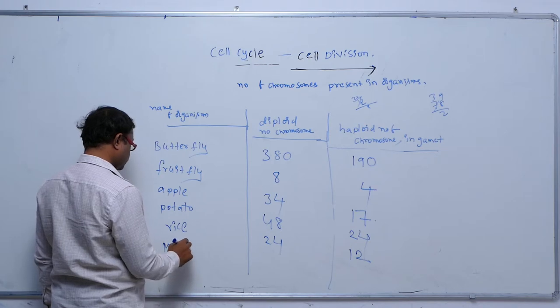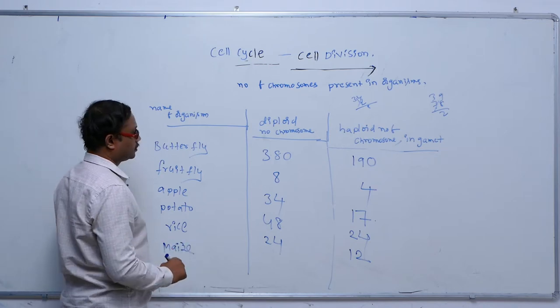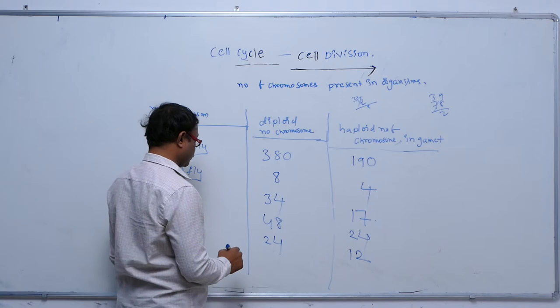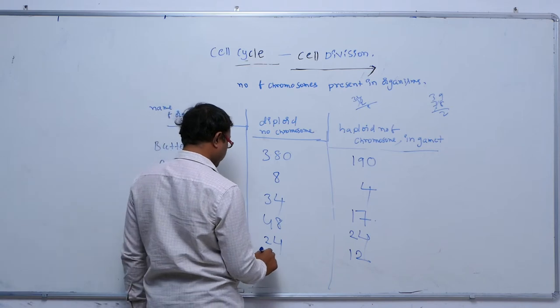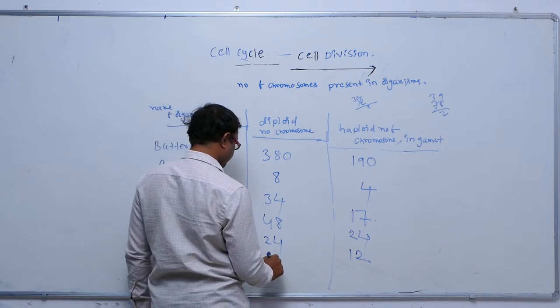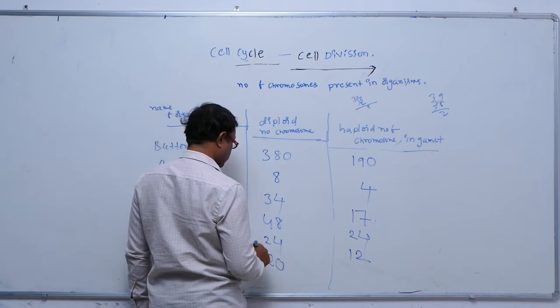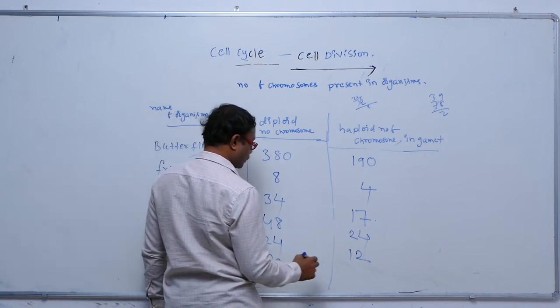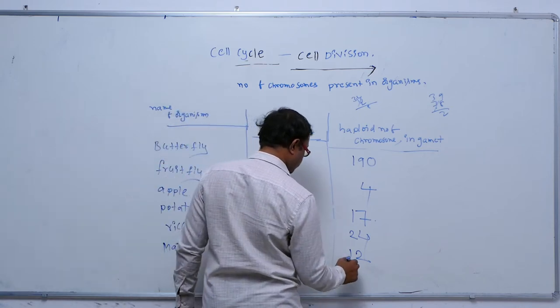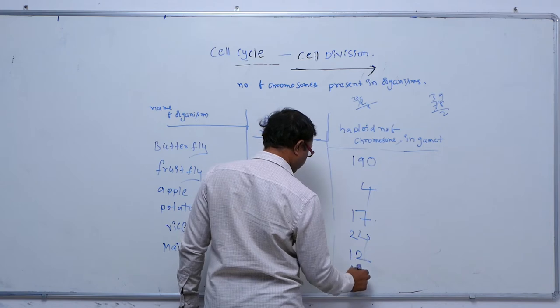In maize, the diploid number of chromosomes is 20, and the haploid number of chromosomes is 10.